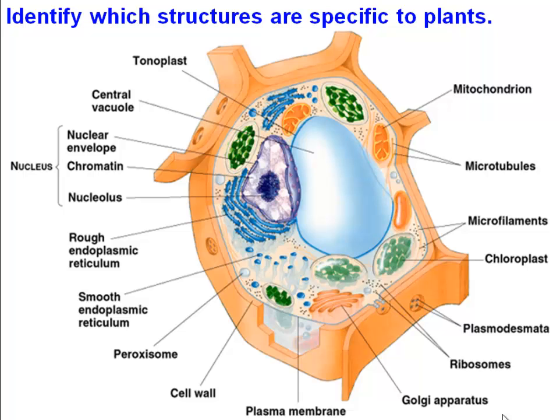Up until now we've spent a lot of time working on the characteristic generalized cell, and now we're going to focus specifically on structures that make the plant cell. Examine this diagram and compare it with what you know of the animal cell. Identify which structures are specifically plant structures.